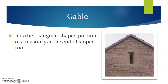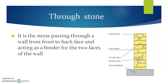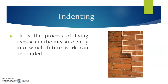Gable. A gable is a triangular-shaped portion of masonry at the end of a sloped roof, as shown in the figure. This is called a gable wall. Then through stone. It is a stone passing through a wall from front to back face, acting as a binder for the two faces of the wall. The cross-section of such a wall is shown here where through stones have been placed. These are very essential for load distribution and the stability of the wall. Indenting. It is a process of leaving a recess in the masonry into the wall for connecting future work.